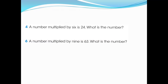Six multiplied by what equals 24? If you know the table of six: six ones are six, six twos are twelve, six threes are eighteen, six fours are 24. So the answer is four.